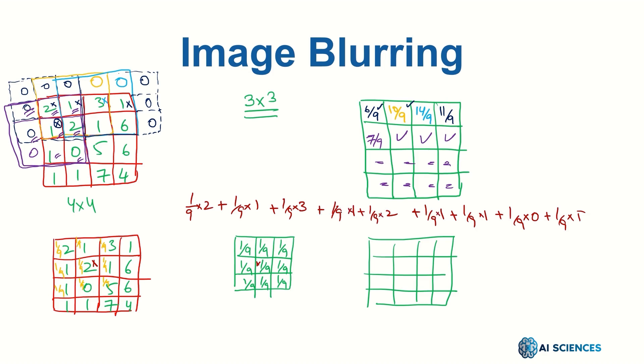And if you see closely, if I just take 1/9 common, which is the common value, then what will happen is I sum up all the intensity values and divide by 9, which is exactly the average of all these numbers. And the result will be placed exactly at this location.